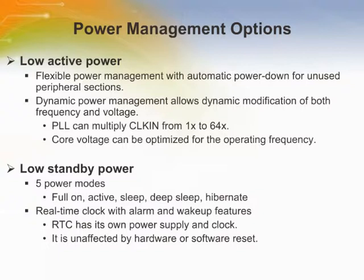There are five standby power modes altogether. Full On has no real power savings — the PLL is running and the operating speed is typically at full. In Active mode, the processor runs from the clock without using the PLL, so this is lower power operation with both the core and peripherals running. In Sleep mode, the PLL is running and the SCLK is typically at full speed, but the CCLK has stopped — the core is idle, waiting for a peripheral DMA transfer to complete, for instance. The BlackFin also has a real-time clock on most variants with an alarm and wake-up feature. The real-time clock is a separate subsystem with its own clock and power supply, unaffected by software or hardware resets. It is one of the devices that can wake the BlackFin out of the deepest sleep states, including Hibernate.